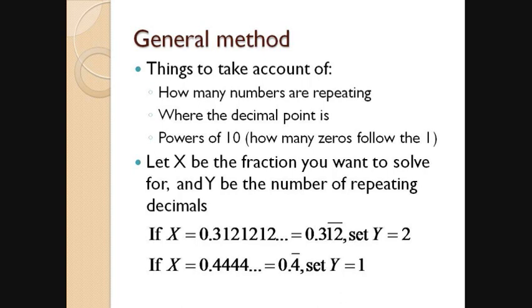So here's how we do the general method. Let x be the fraction you want to solve for, so x can be your decimal number. And let y be the number of repeating decimals. So I have two examples here. I have 0.3121212, so the 12 repeats. We have two digits that repeat, so y is just 2. In our second case, 0.44444, the 4 is the only number that repeats, so we just set y to 1.